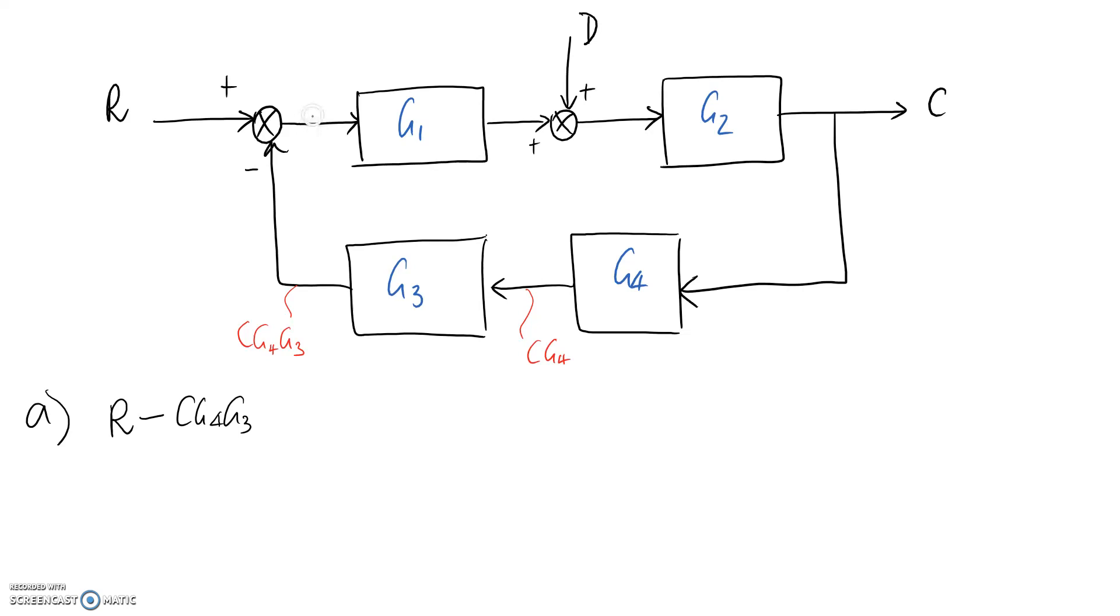So this expression here now represents the signal at the output of my summing junction. To jump over again I need to multiply this signal by what's inside the block, which is G1. This now brings me to this point here in my system. I've now entered into another summing junction. The input signal here needs to be positive, and we need to add on the input here which is D.